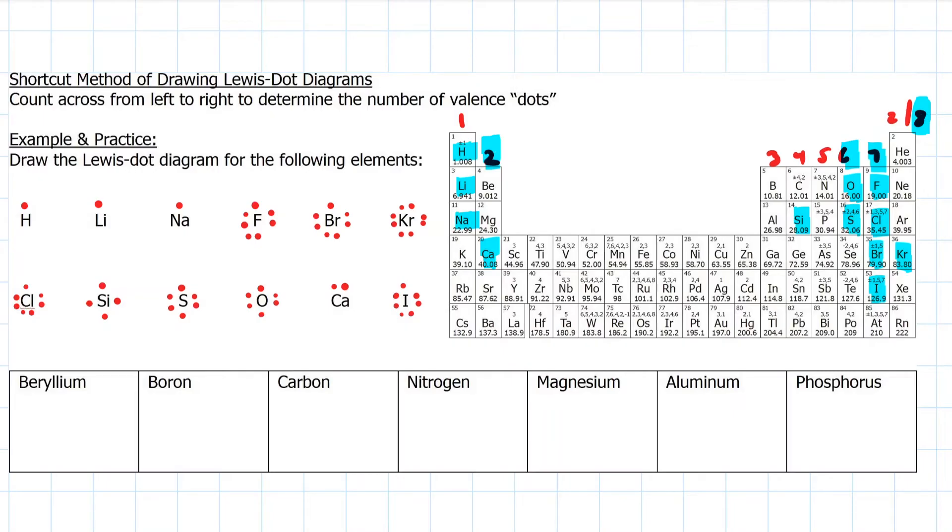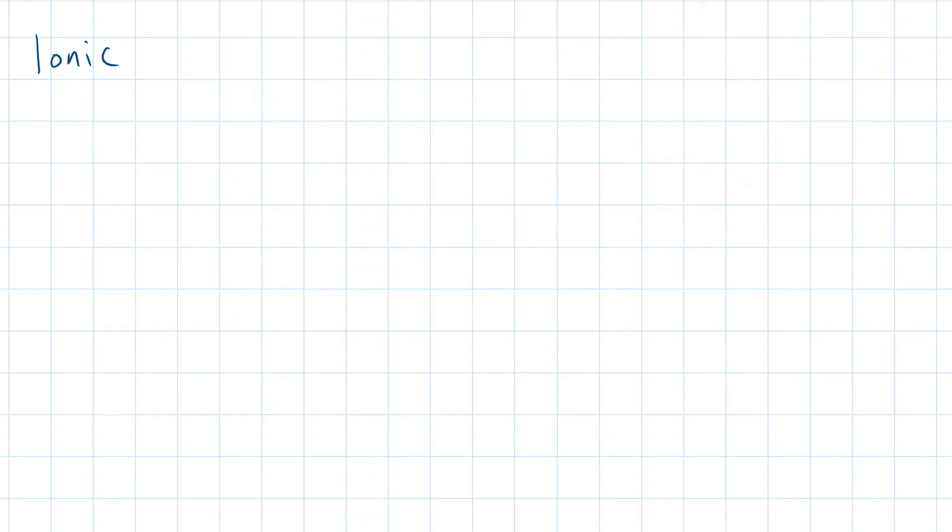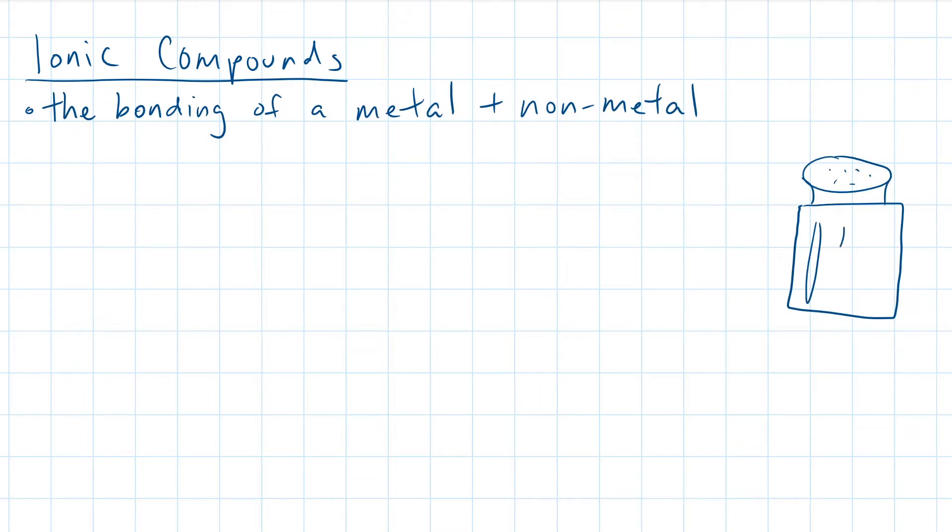Pause this video and trial the next seven on your own. Did you get them all correct? Good. On to the next topic. An ionic compound is formed when a metal and a non-metal fall in love and bond together. A classic example of an ionic compound is table salt, where sodium and chlorine bond together to form that savory crystal. But before that happens, there is a fundamental rule in chemistry.